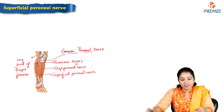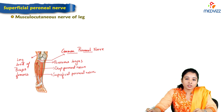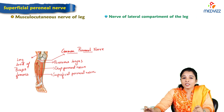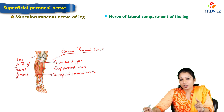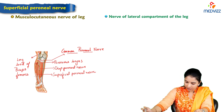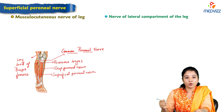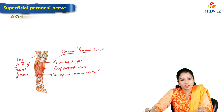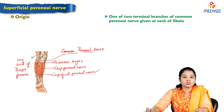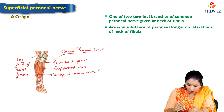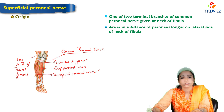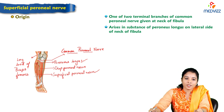The superficial peroneal nerve is considered the musculocutaneous nerve of the leg. It is the nerve of the lateral compartment, the peroneal compartment, which contains only two muscles: peroneus longus and peroneus brevis. It is one of the two terminal branches of the common peroneal nerve given off at the neck of the fibula, and it arises in the substance of the peroneus longus on the lateral side of the neck of the fibula.